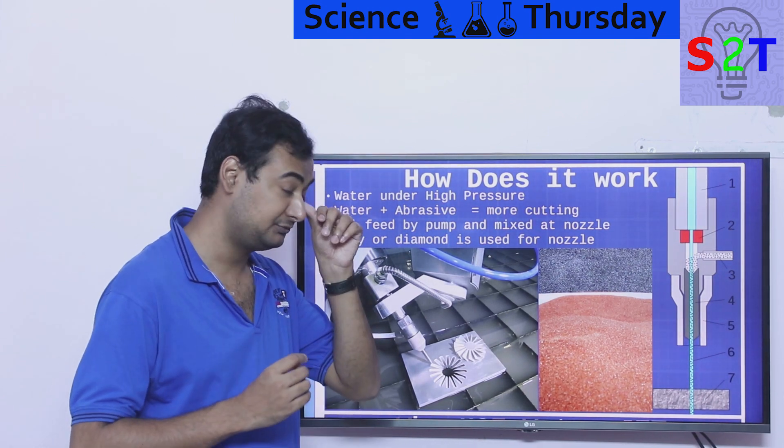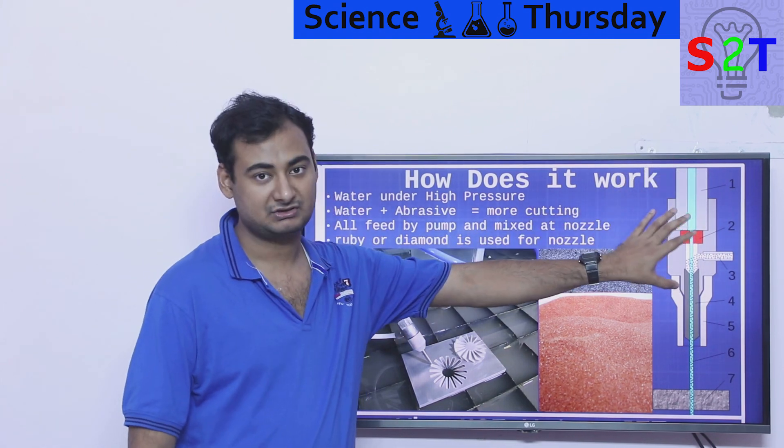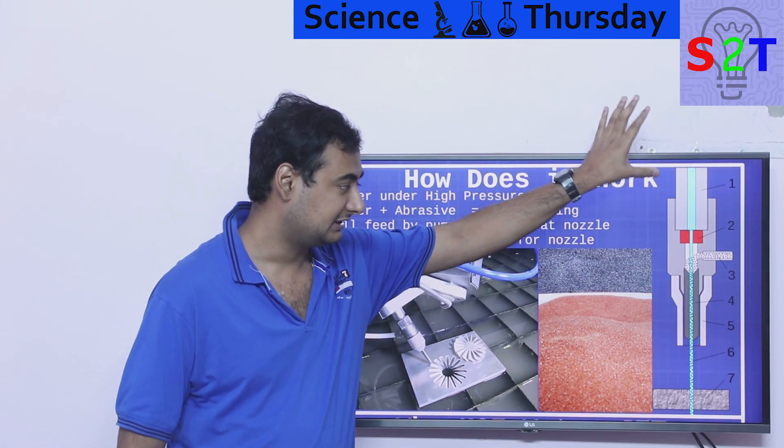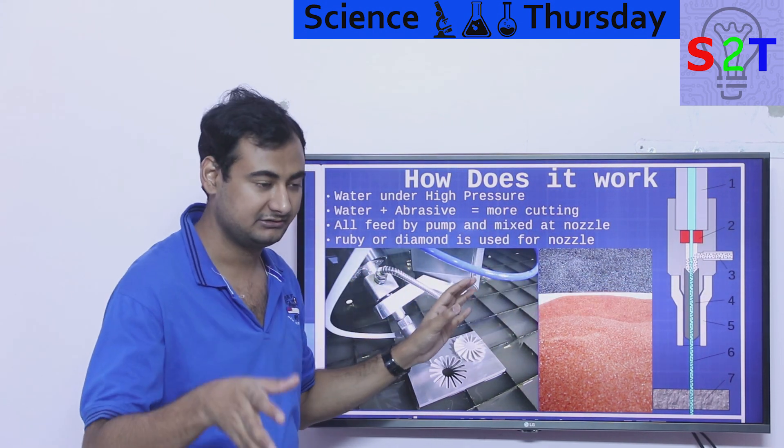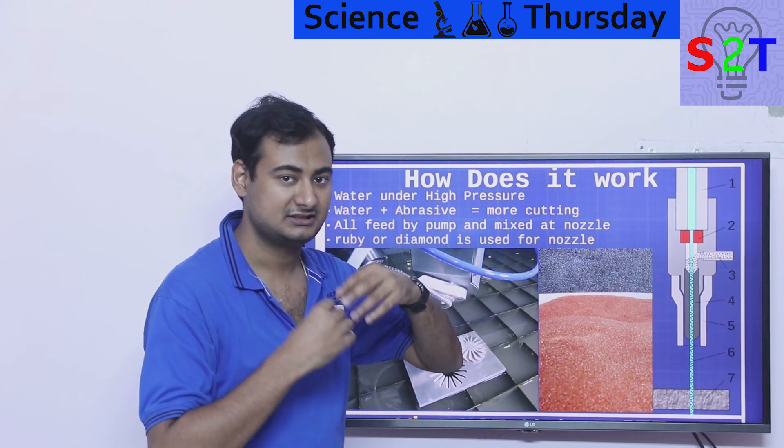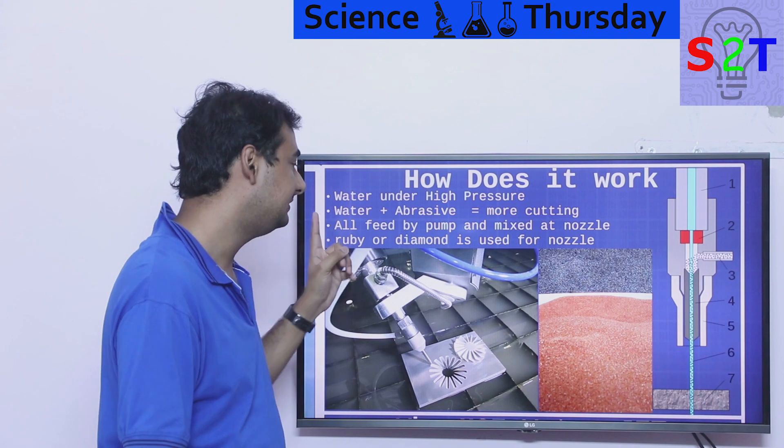So then the question becomes how do you channel such kind of power if it is that powerful. Well we take the water, we pressurize it. Now we do not pressurize it to ludicrous level right there. So what we do is bring it to your cutting piece, wherever you want to do the cutting, and we constrict it, we force it through a nozzle. Same as a rocket engine.